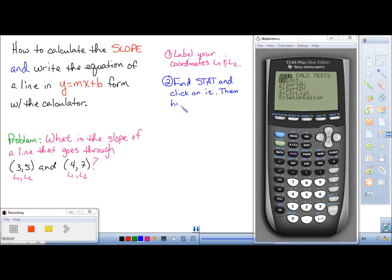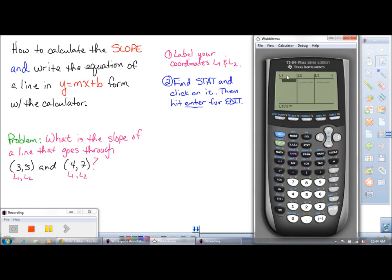Then what we're going to do is we're going to go under the edit section here, and we're actually going to enter in our coordinates as L1 and L2. You can do this several ways. You can go in and press all of your L1s in first and then all of your L2s, or if you like to do L1 and L2 as a set, you can do that. But for this example, I'm just going to use L1, 3, and 4, and then L2, 5, and 7.